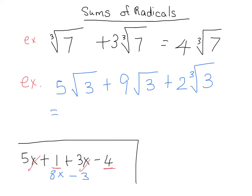We get 5 root 3 plus 9 root 3 gives us 14 root 3. Again, it's like saying 5 apples plus 9 apples gives us 14 apples. But we can't add it to our oranges.